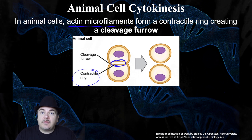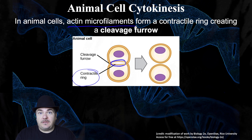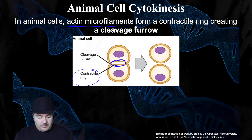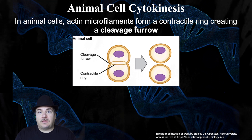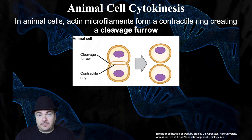Recall from an earlier lecture, we learned about the cell cytoskeleton made out of three types of fibers: tubular microtubules, actin microfilaments, and intermediate filaments. For this chapter, we need to remember two of those types. Tubulin microtubules, which we talked about in the last lecture, are responsible for moving or separating the chromosomes during cell division. In this lecture, we're talking about actin microfilaments.